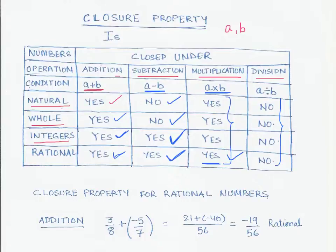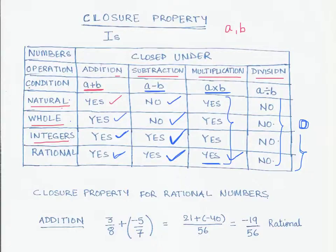A quick observation: natural and whole numbers have the same closure properties because the only difference between them is the addition of zero. Similarly, integers and rational numbers have the same closure properties — their rows in the table are identical. In the next video we will try to prove the closure property for rational numbers, looking at addition, subtraction, multiplication, and division.